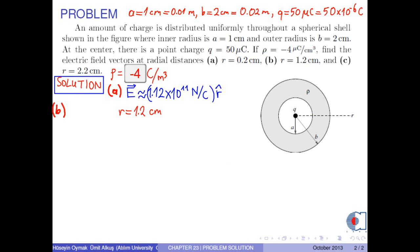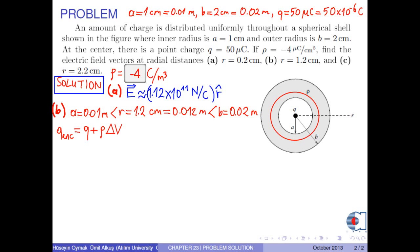For part B, R is 1.2 cm, or 0.012 m in SI units. As you see, it is greater than the inner radius A and less than the outer radius B. Therefore, the Gaussian surface is inside the spherical shell. The total charge enclosed by this surface is Q plus rho times delta V, where delta V is the volume containing only the spherical shell portion, calculated by the formula 4 pi over 3 times R cubed minus A cubed.